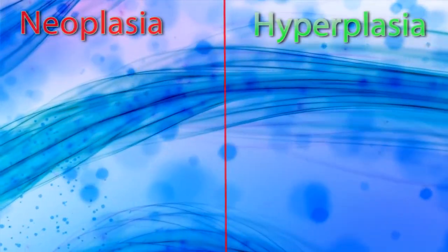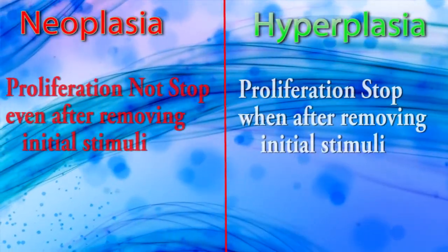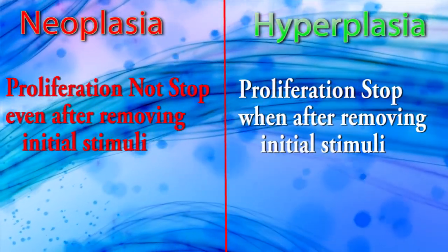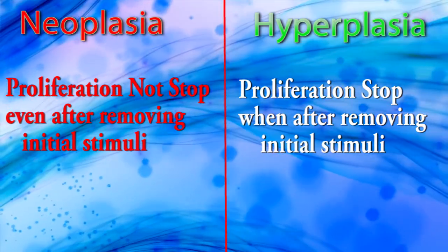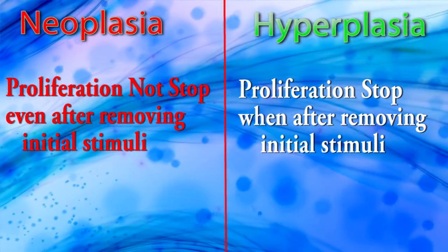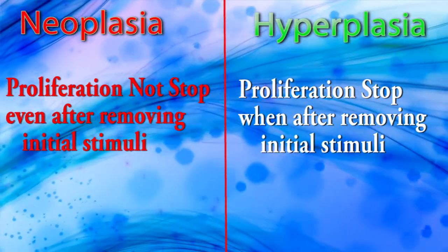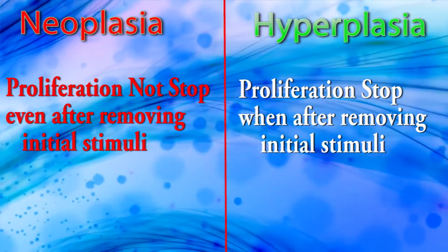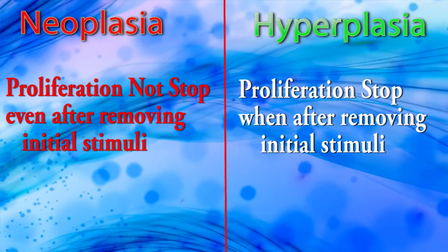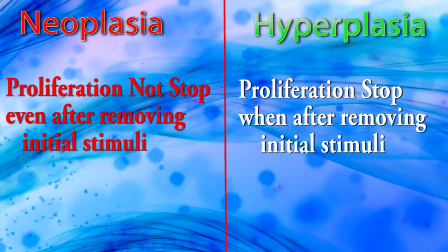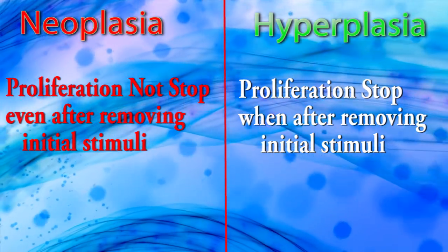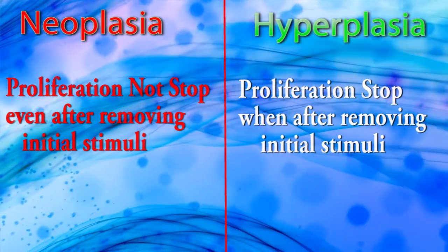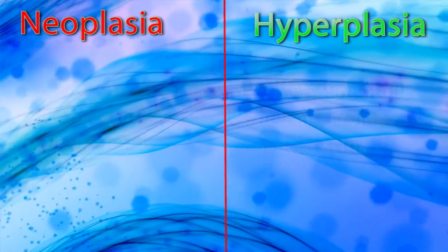In neoplasia, proliferation does not stop even after removing the initial stimuli. But in hyperplasia, proliferation stops after removing the initial stimuli, and cells can return to normal.